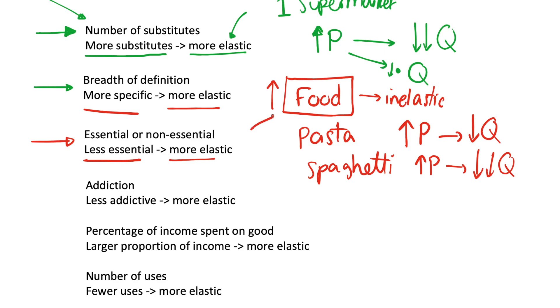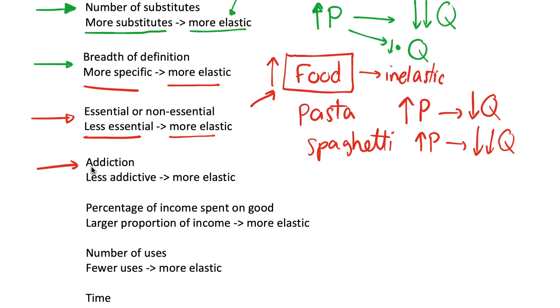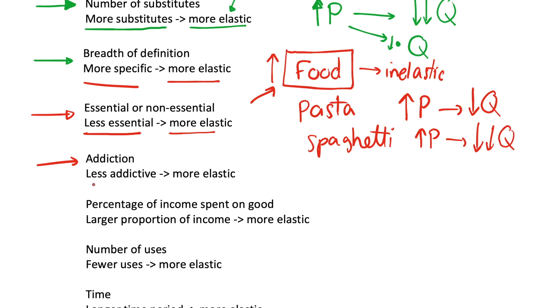like again, we can use this food example. Well, it's essential for our survival, so we're not going to reduce our demand for it. So it's going to be more inelastic. Sort of linked to this idea is this factor with addiction. And so if something is less addictive, it's going to be more elastic. And if something is very addictive, it's going to be inelastic.